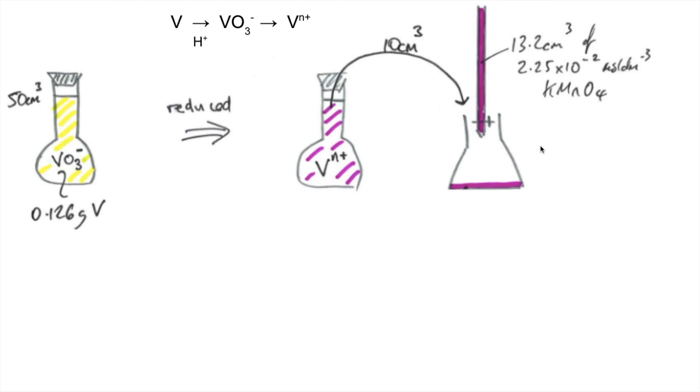So the first thing I'm going to do is calculate the moles of vanadium. Mass over MR, so it's that many moles. So like I've just said, same moles of VO3 minus in there, same moles of Vn plus in there, and a fifth of the moles in there.